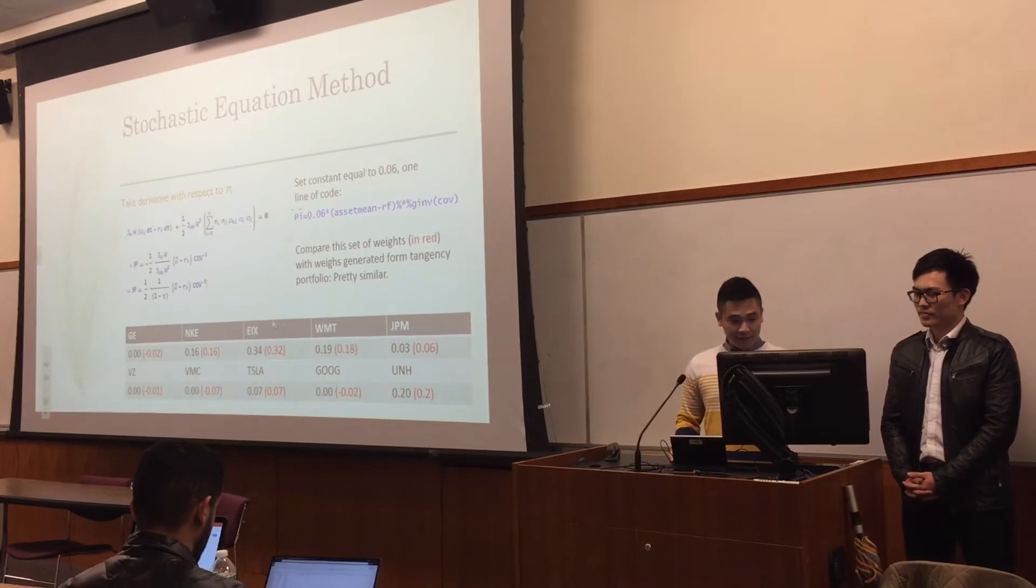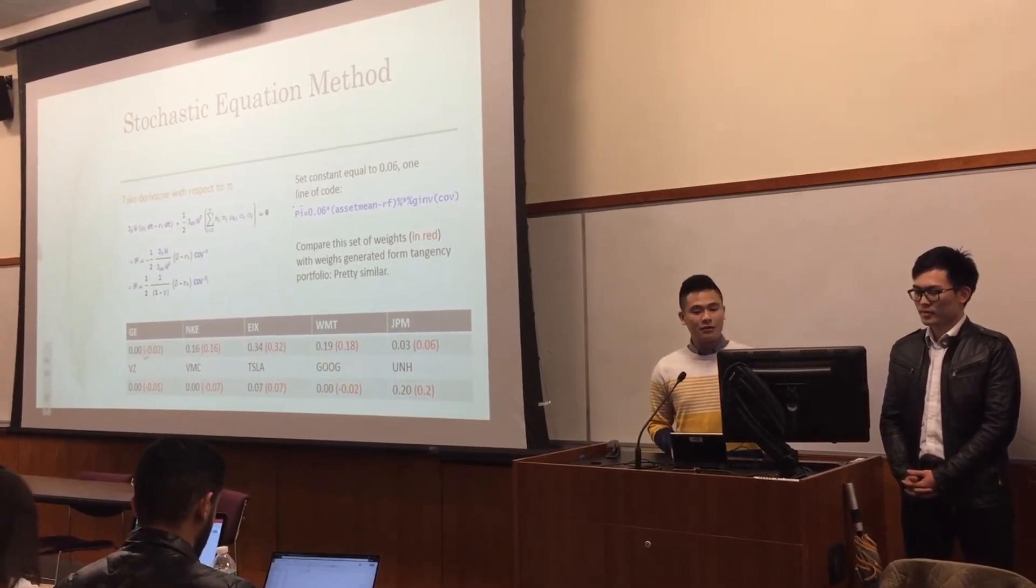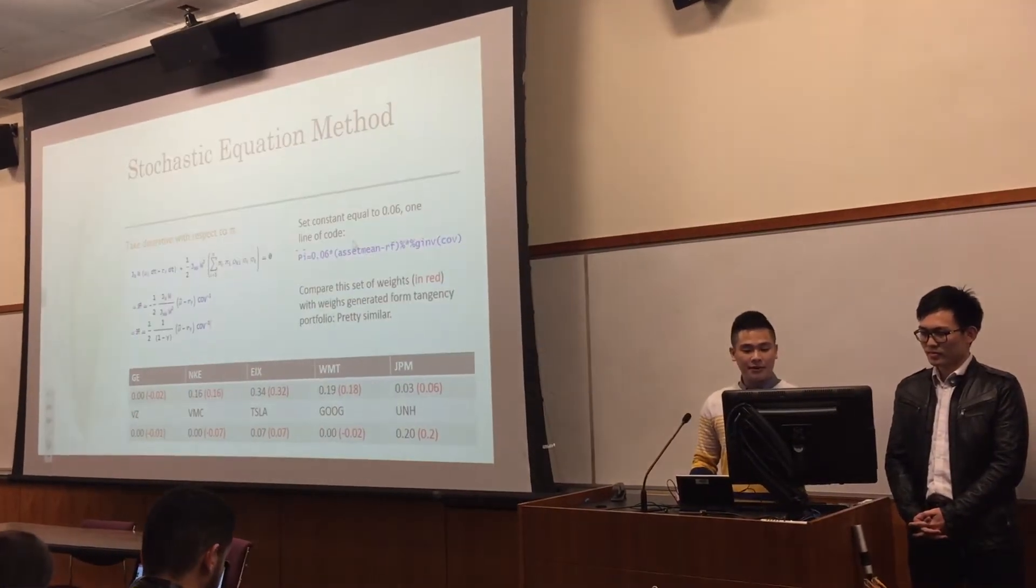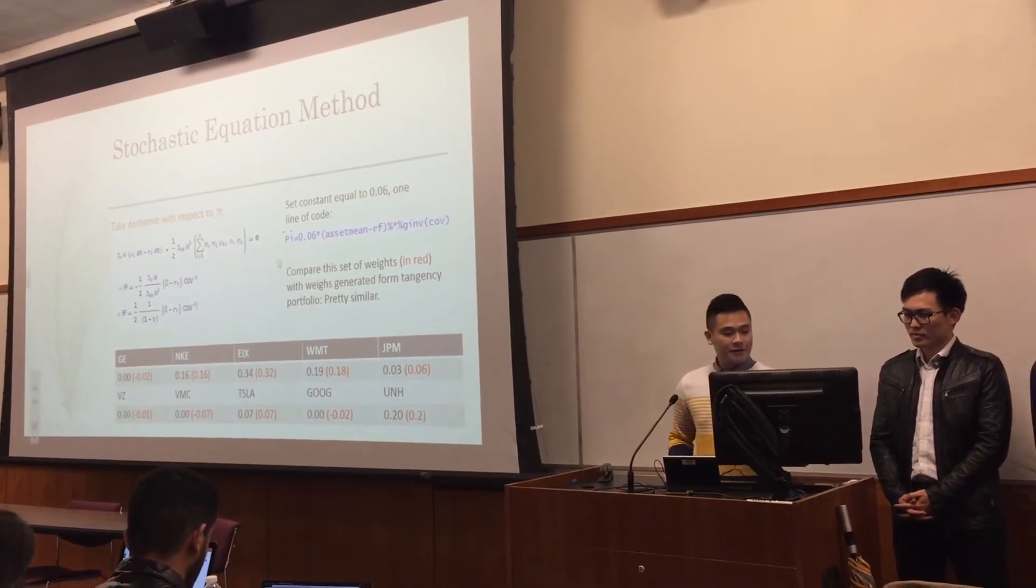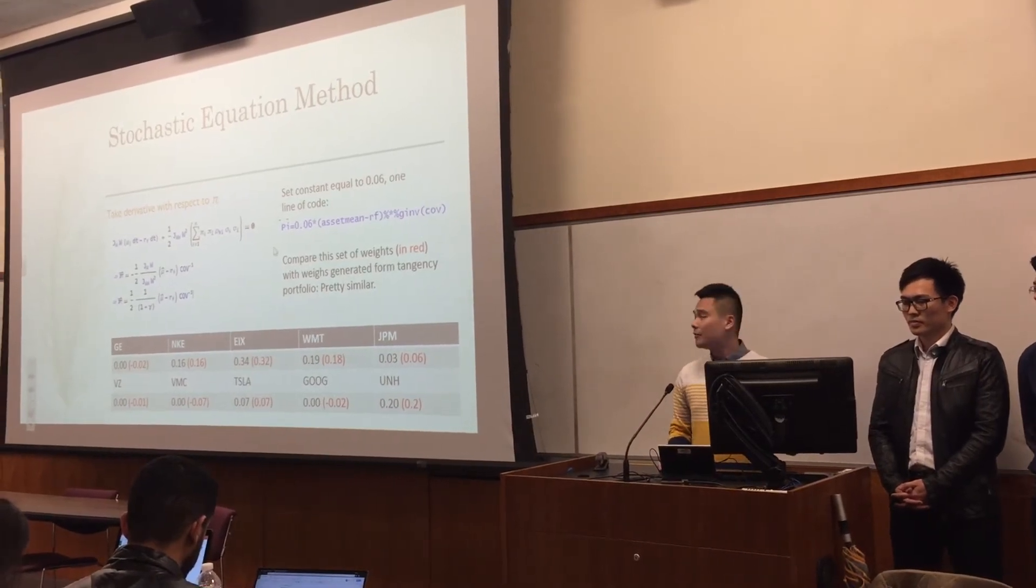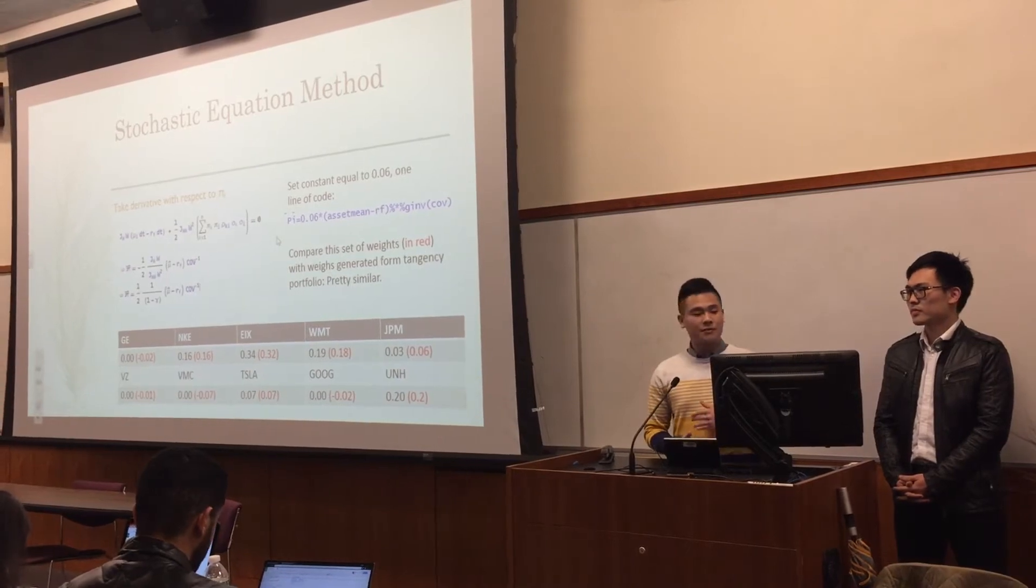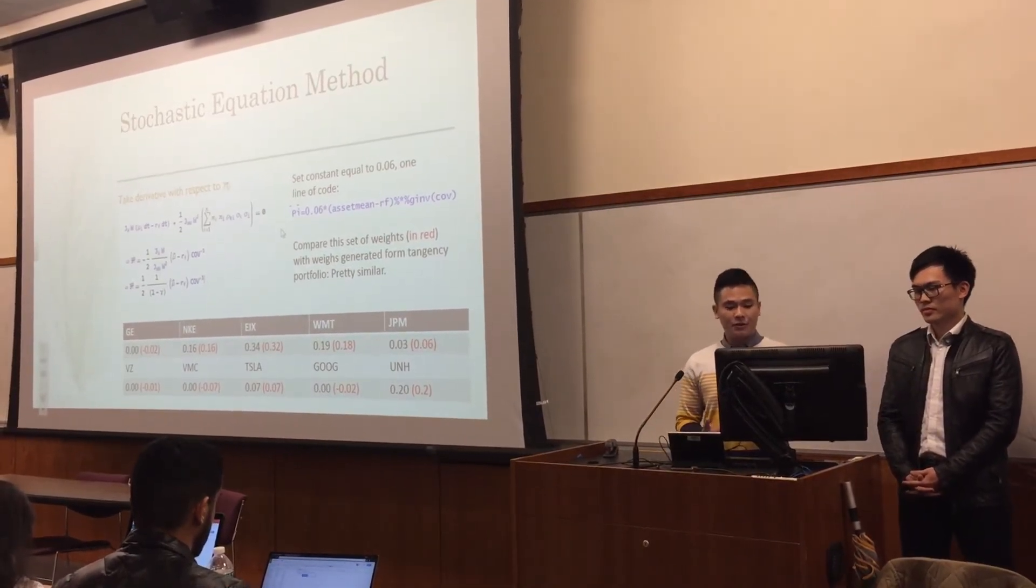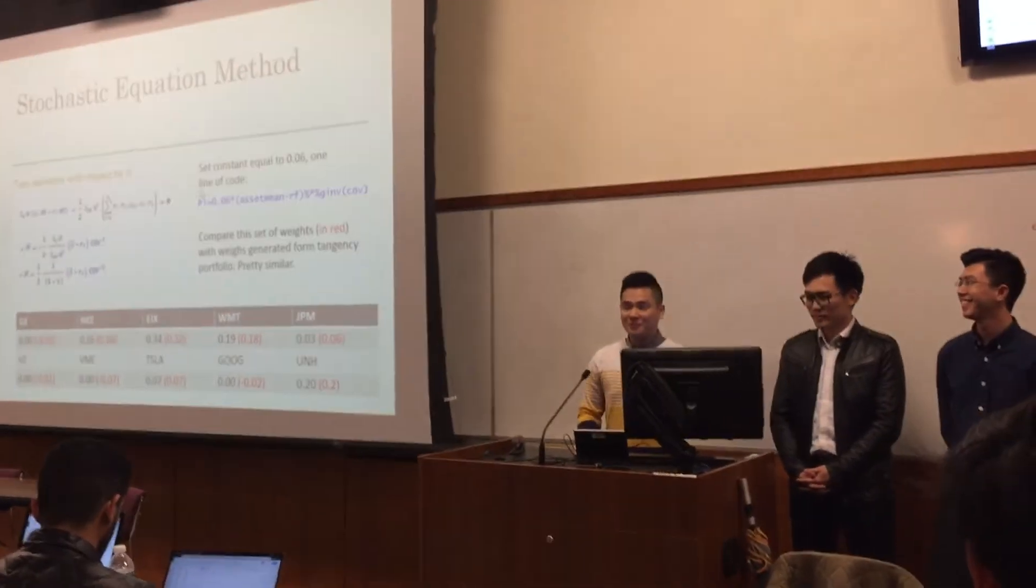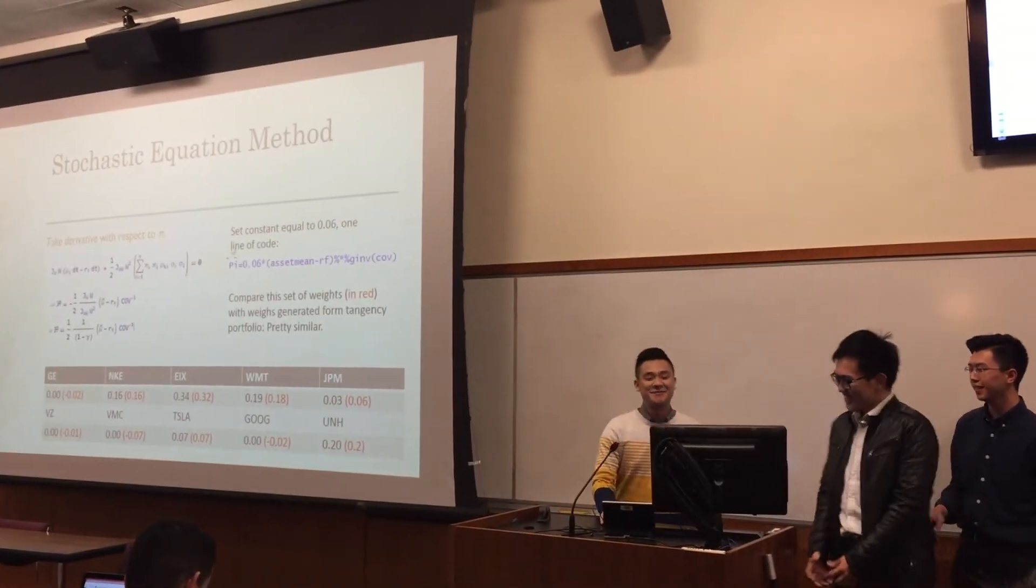As we can see from the tables, the black number is what we got from the programming method, and the red number is what we got from the mathematical method. They are pretty close. One advantage of this method is we can add other assets other than stocks to our portfolio. For example, if we introduce a Poisson process, then we can add mortgages or defaultable bonds. And that's my part.